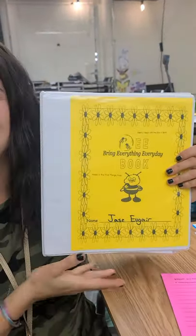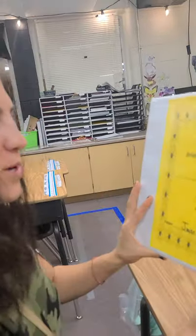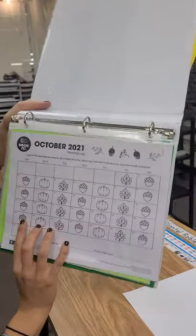This is the B binder friends. I'm going to explain the B binder. So we have the first page may look a little bit different. This is going to be your reading log.